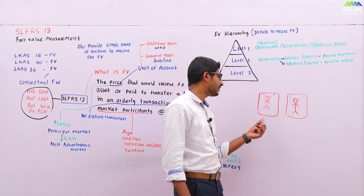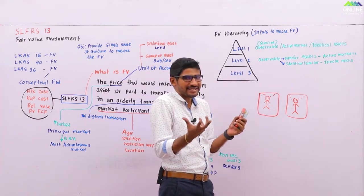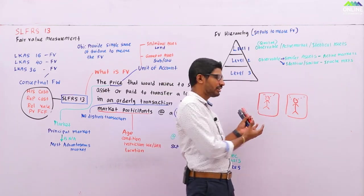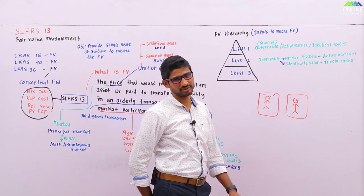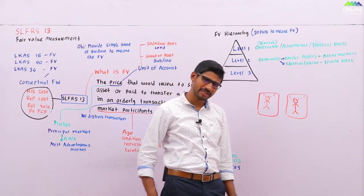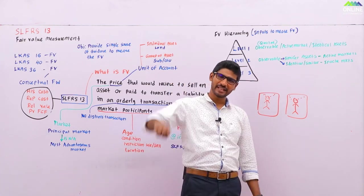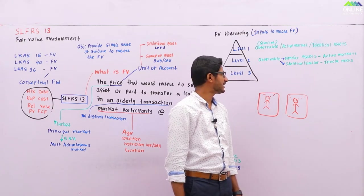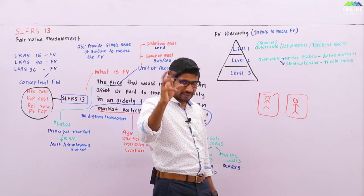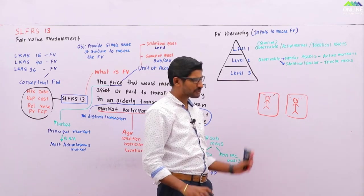What is meant by similar? Similar means this is the best example - it looks the same but there are small differences. That's the basic difference. Identical means exactly the same method, but similar means basically it has a very small amount of difference.